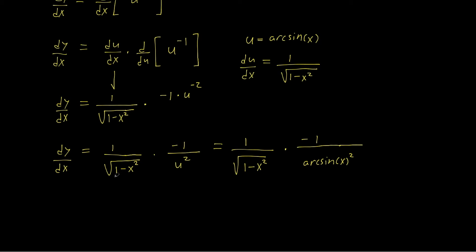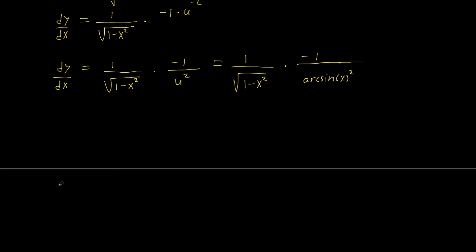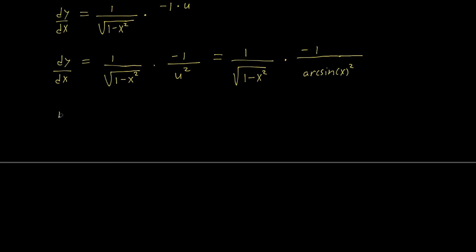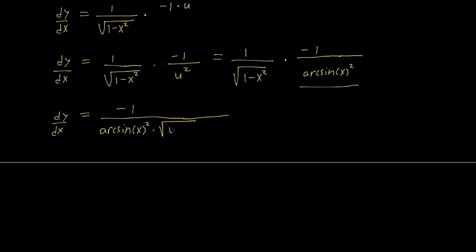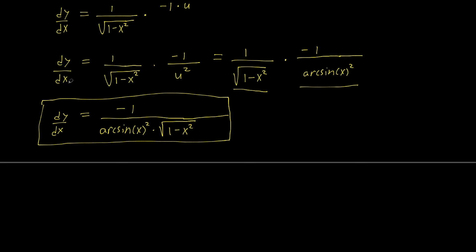Our final step is to complete the multiplication, so dy/dx equals negative 1 over arcsin(x) squared, times the square root of 1 minus x squared. And we are done.